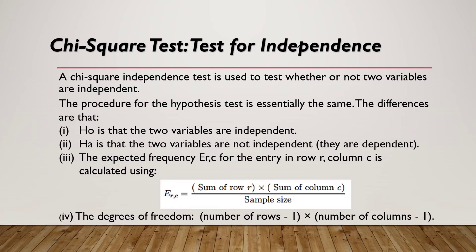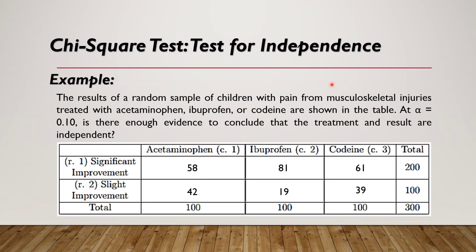For the example: a random sample of children with pain from musculoskeletal injuries were treated with acetaminophen, ibuprofen, or codeine, and the results are shown in the table. At alpha = 0.10, is there enough evidence to conclude that the treatment and result are independent? The table shows significant improvement and slight improvement as outcomes, with row totals of 200 and 100, column totals of 100 each, and a grand total of 300.